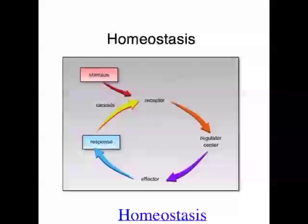For example, the temperature of the human body is maintained at a stable level and it's normally around 37 degrees. The level of nutrients in the blood — so the amount of glucose in the blood — is under homeostatic control. The concentration of ions in the body, the amount of water in the body, all of these things are under homeostatic control. They're kept at really constant levels — that's homeostasis.